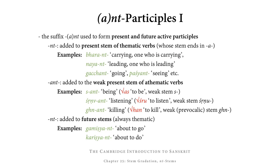Now on to another kind of NT stem: participles formed by adding either nt or ant. The suffix nt or ant is used to form the present and future active participles of thematic and athematic verbs. NT is added to the present stem of thematic verbs, whose stems end in the thematic vowel a, giving us the present active participle. For example, from bhṛ-bharati ('to carry'), we get bharant ('carrying'). From nī-nayati ('to lead'), we get nayant. From gam-gacchati, we get gacchat. From dṛś-paśyati ('to see'), we get paśyant.